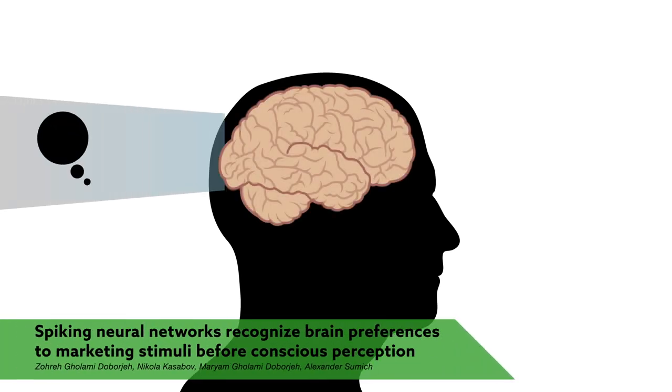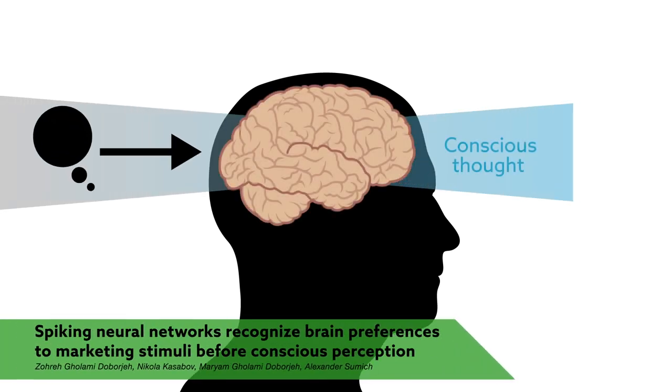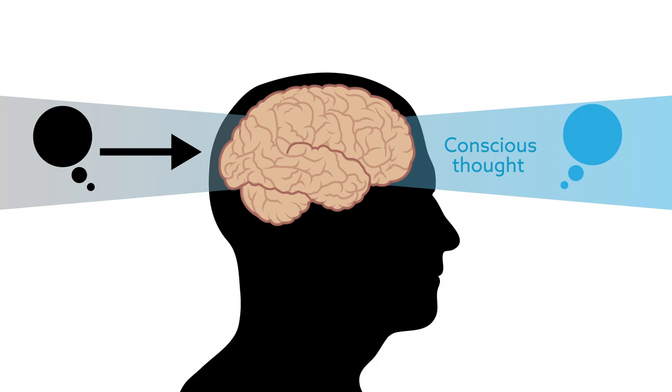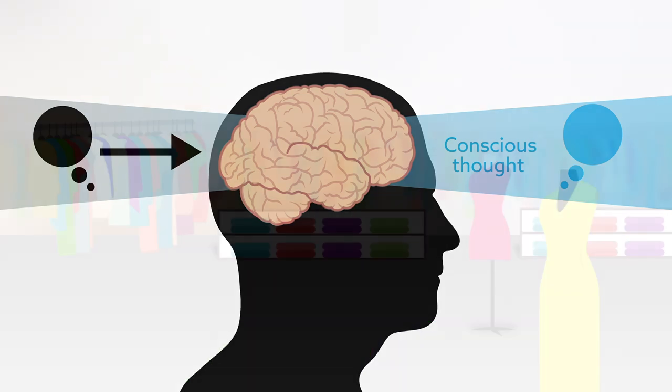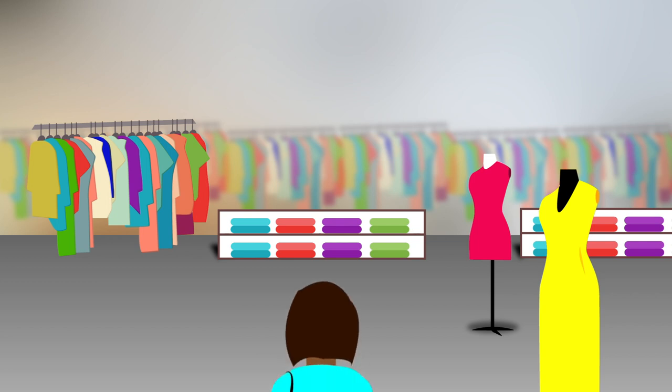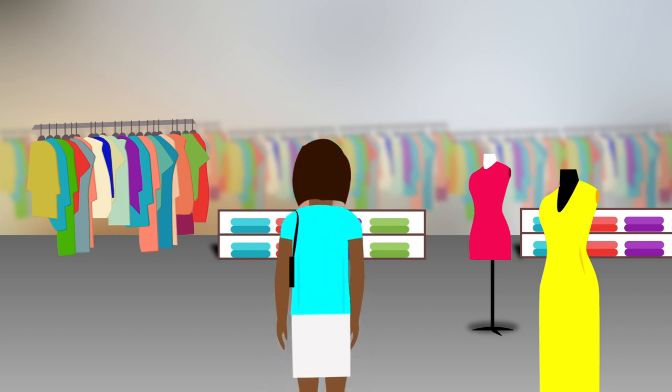Understanding how human decision-making and preferences manifest before conscious thought has long challenged researchers focused on cognitive and information science. Now, the field of neuromarketing, a discipline that looks at the neurocognitive underpinnings of consumer behavior, is starting to uncover, in amazing detail, exactly how the brain goes about recognizing a brand.